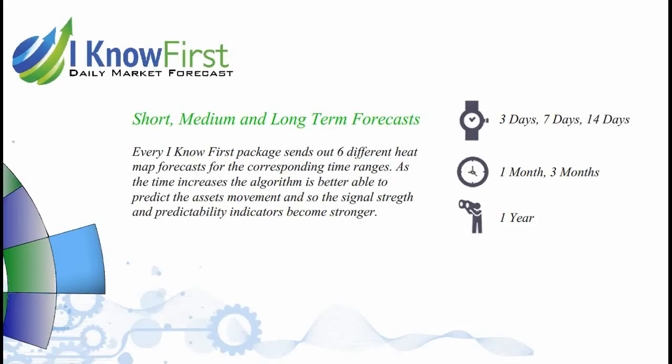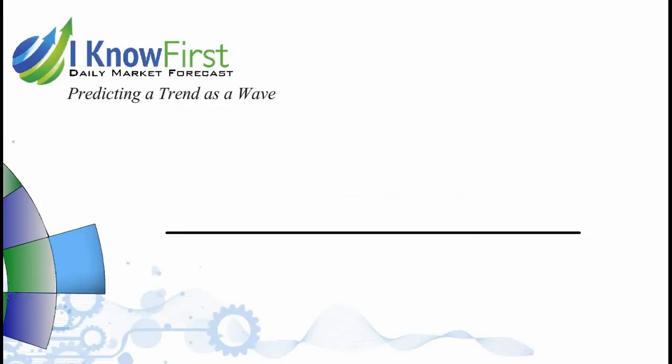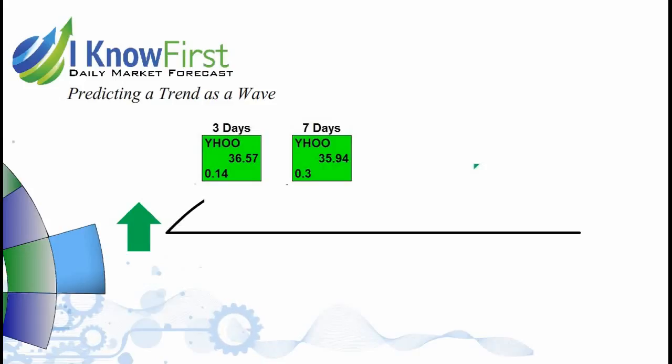The algorithm sees the future of an asset as a wave, which we can visualize if we look at all the time horizons. In this example, a bullish 3 day forecast means the price is expected to go up.